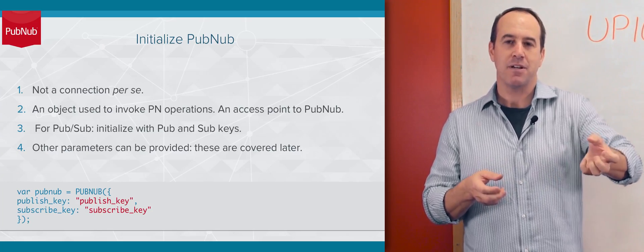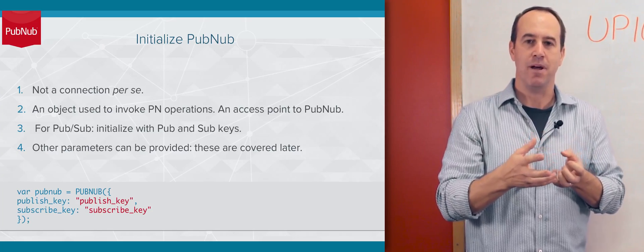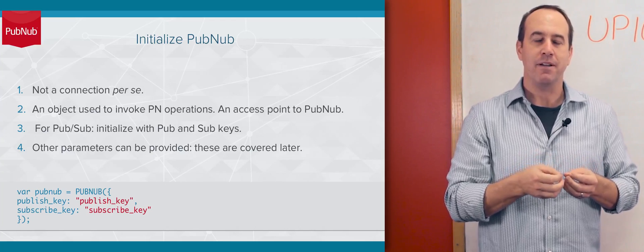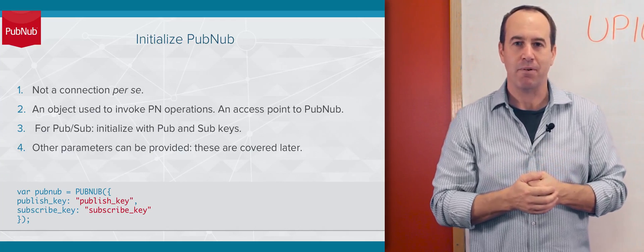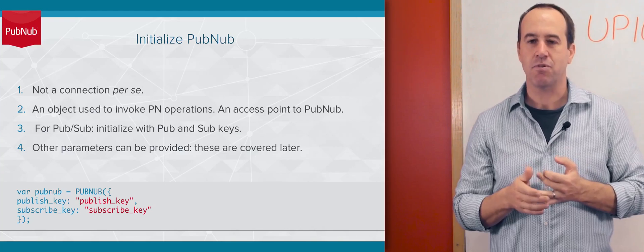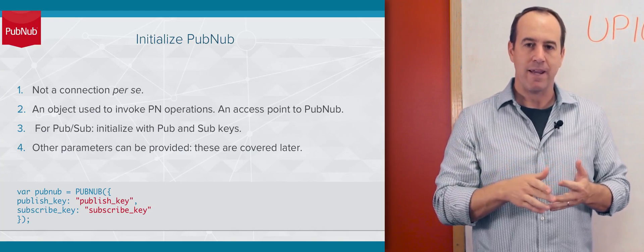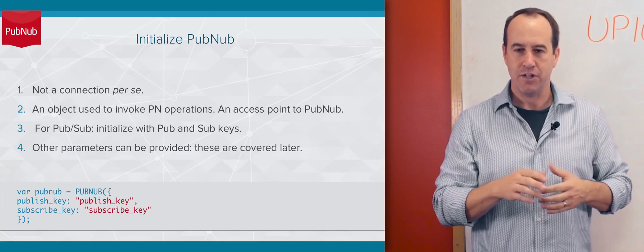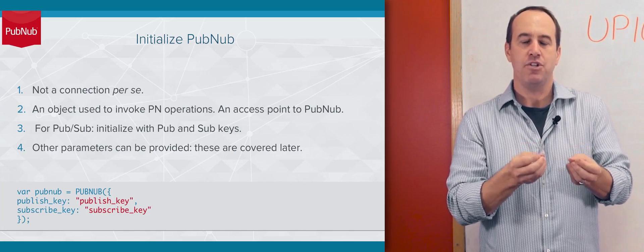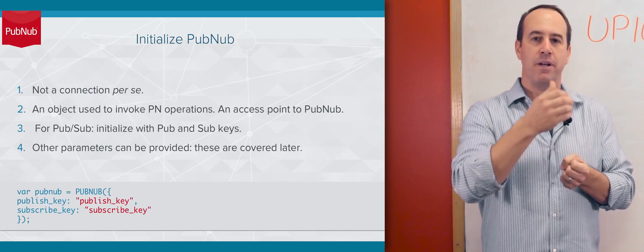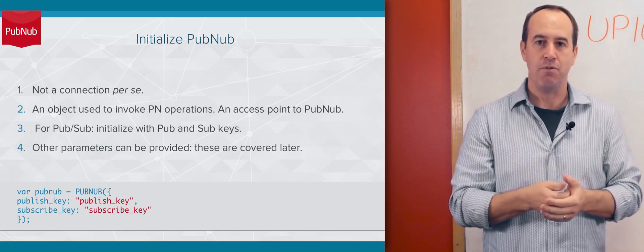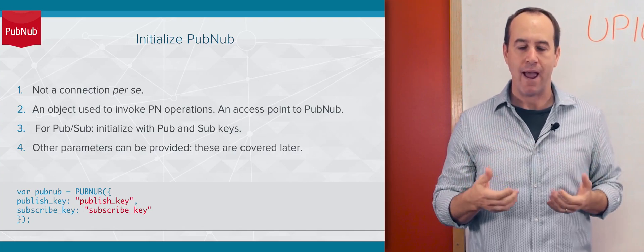That PubNub object doesn't really represent the connection to PubNub. It represents an object that you can use to invoke PubNub operations, whether that be publish, subscribe, and in other courses we'll talk about here now and history and so on. Essentially, this instance of PubNub is your access point to invoke operations or request PubNub to do things on your behalf.